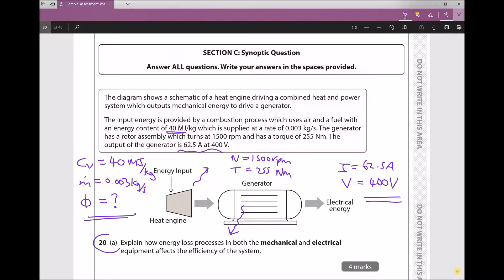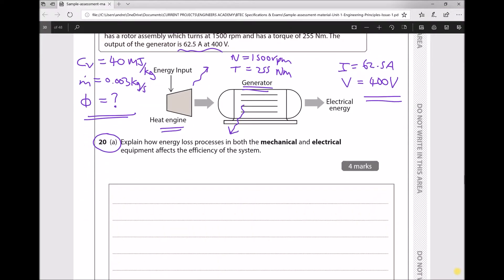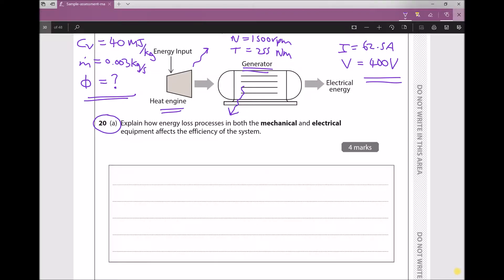Now question 20A asks us to explain how energy loss processes in both the mechanical and electrical equipment affect the efficiency of the system. Well, our mechanical equipment is our heat engine and our electrical equipment is our generator. Each of those are going to have losses. Let's consider the mechanical losses first in the heat engine. I would begin by specifying what the purpose of a heat engine is. The role of the heat engine is to take heat energy and convert it to mechanical work.